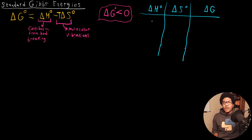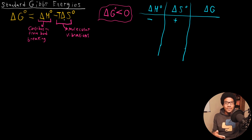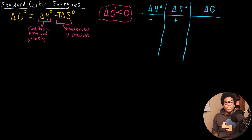The first scenario is if delta H is negative and delta S is positive. This says we have an exothermic reaction that is increasing in entropy. This is always going to be spontaneous because delta G will always be negative: your delta H is negative, and this T delta S term is also negative, so it always results in a negative delta G. This case is always spontaneous.